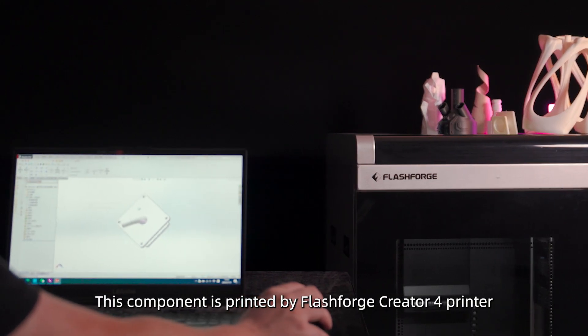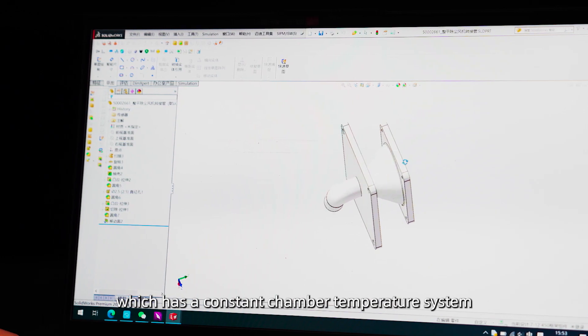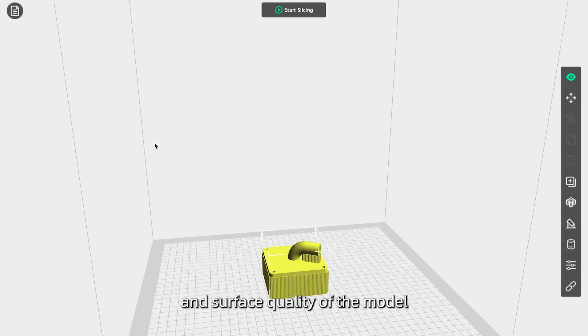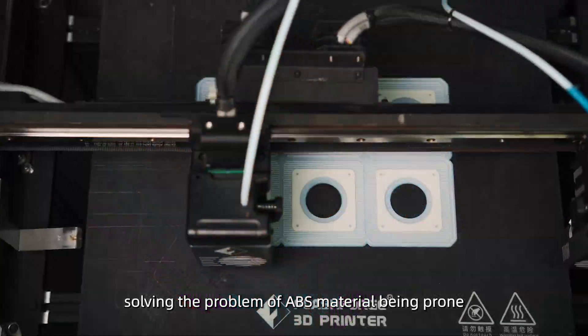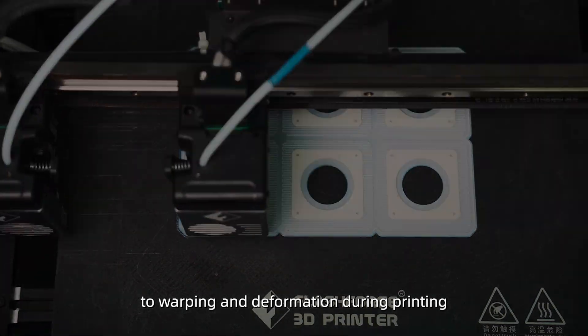This component is printed by FlashForge Creator Printer, which has a constant chamber temperature system to ensure high dimensional accuracy and surface quality of the model, solving the problem of ABS material being prone to warping and deformation during printing.